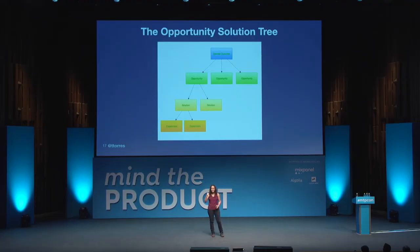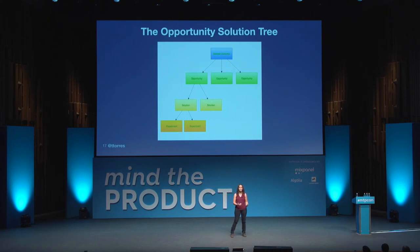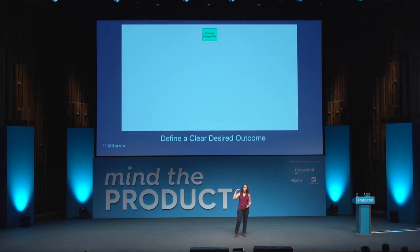So I started to ask: is there a way that a product team could develop a shared mental representation of all the knowledge they're learning, that would help them make fast product decisions? And this is what led to what I call the opportunity solution tree. This depiction of it looks really simple, but I'm going to use my story to illustrate some of the complexity with this tool.